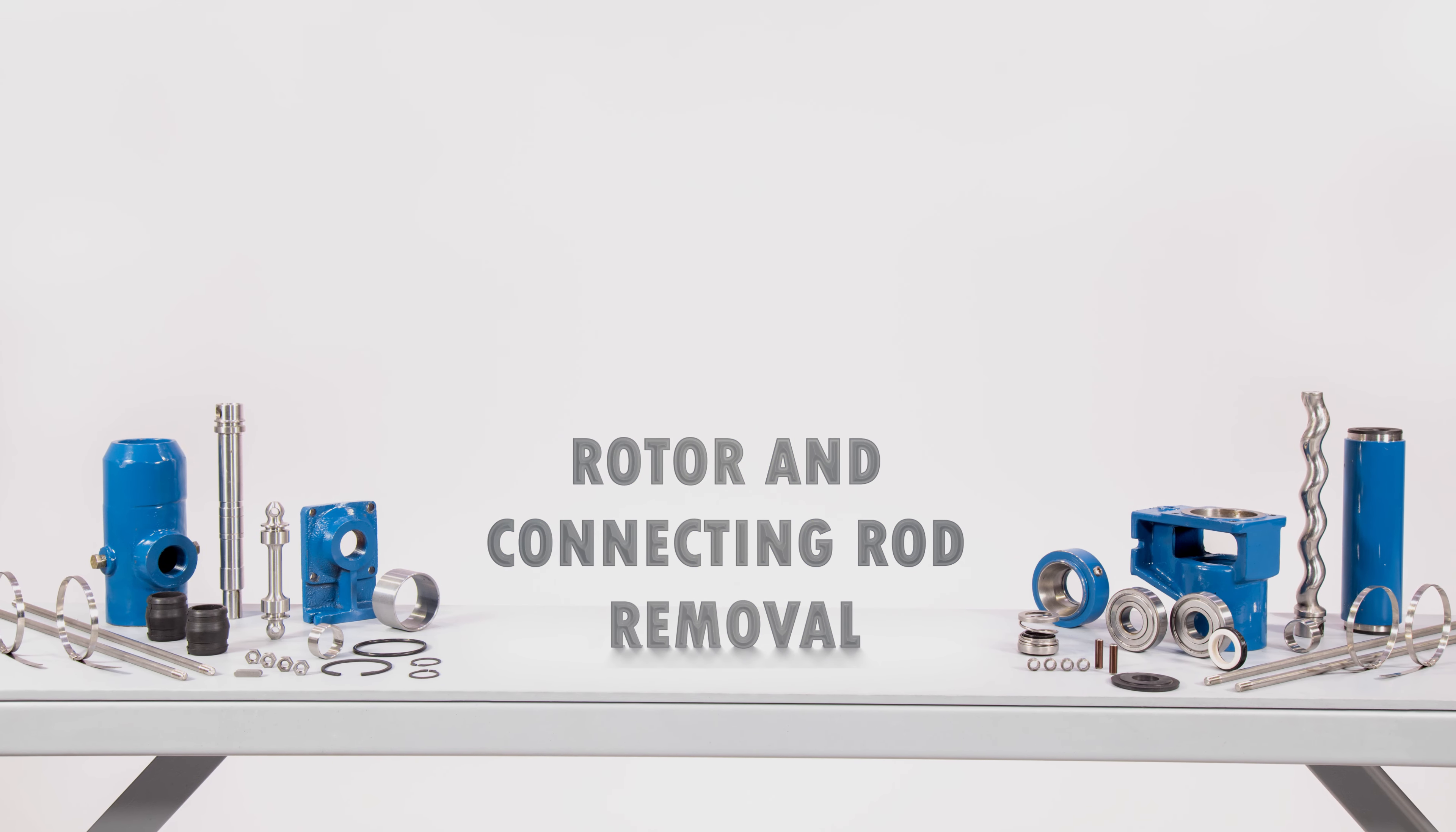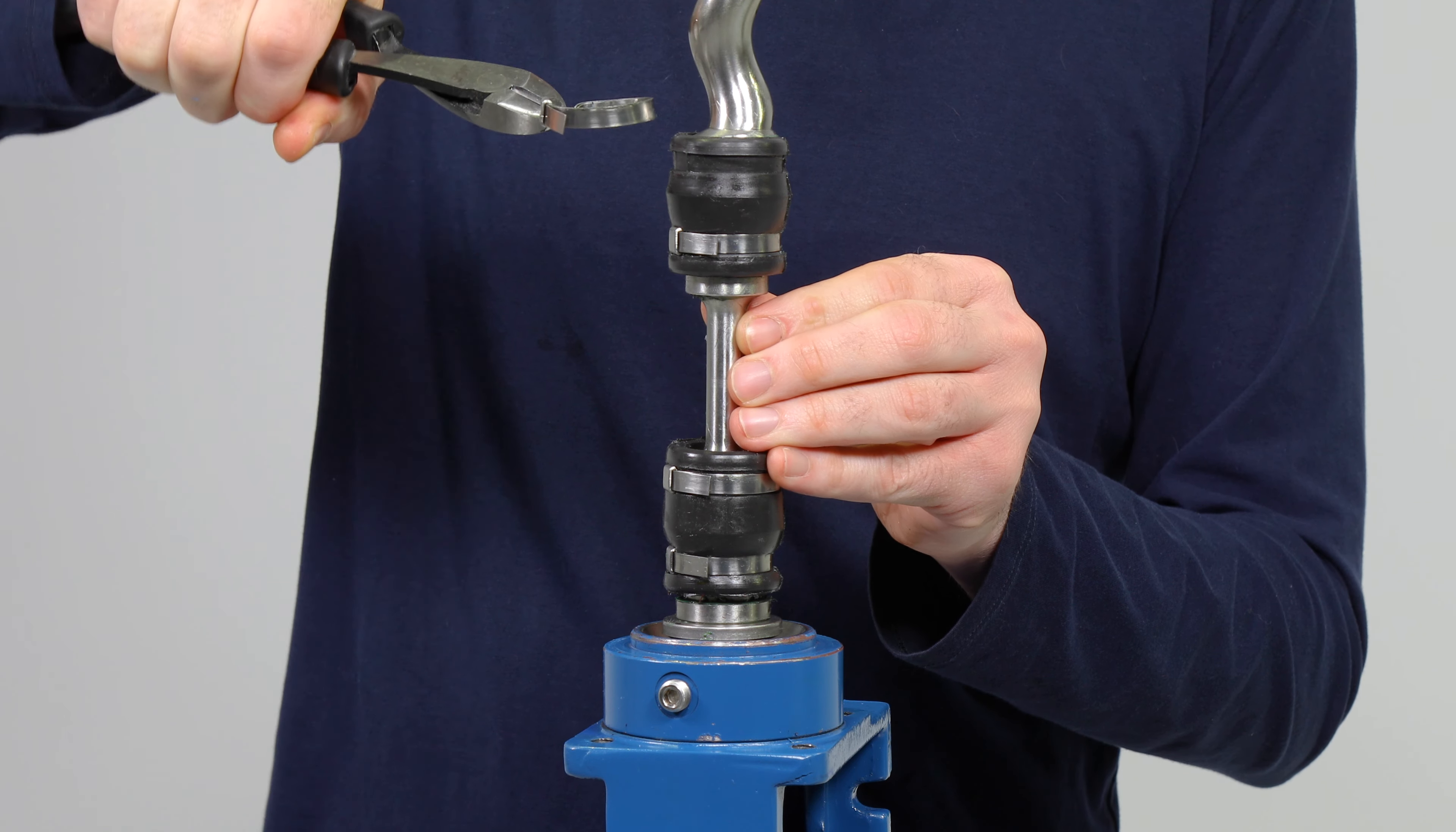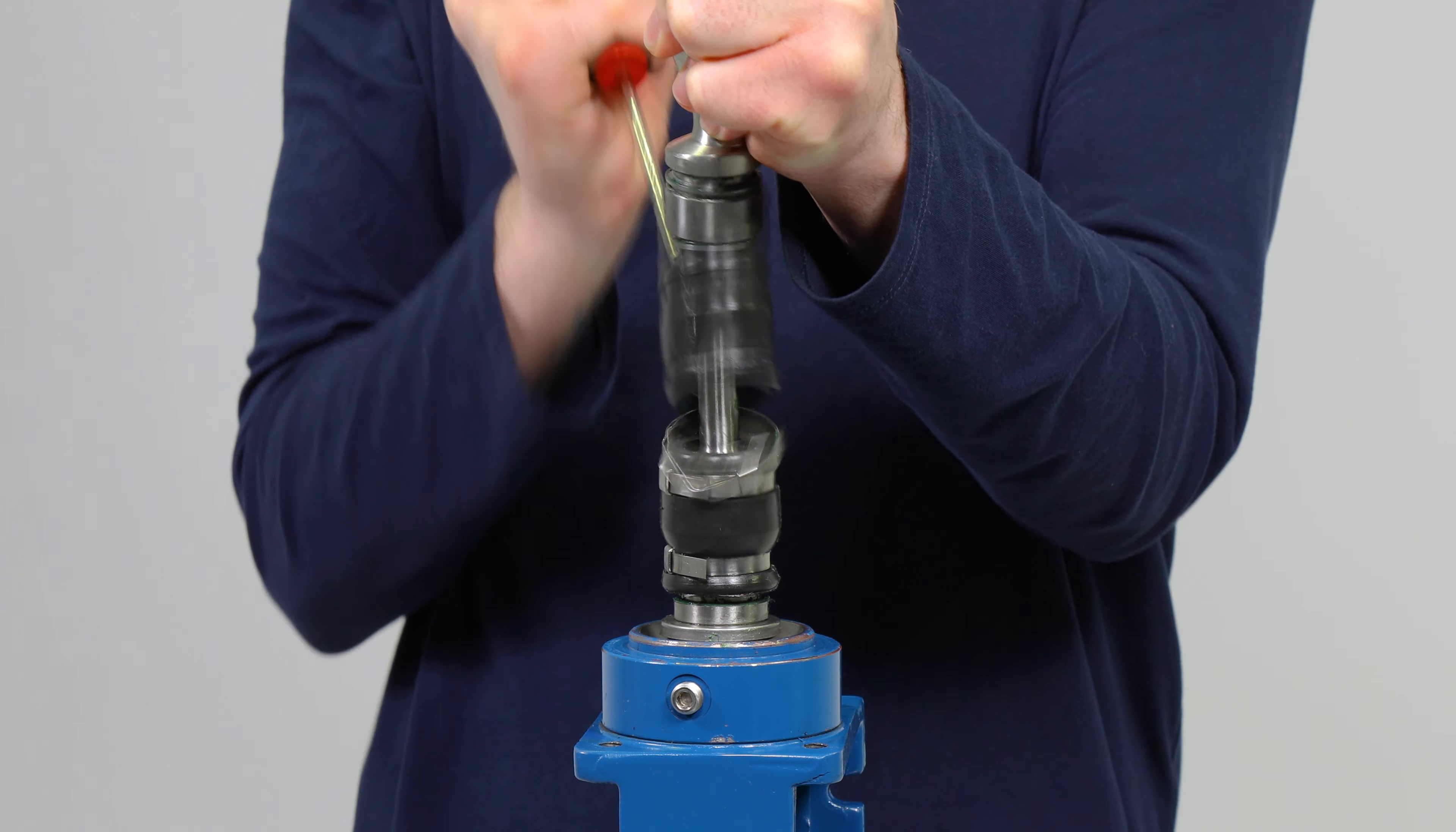Rotor and connecting rod removal. Use a pair of needle nose pliers to loosen the metal bands and slide them off the rubber sleeve. Once the metal bands are removed, use a flathead screwdriver to pry the rubber sleeve off the joint.